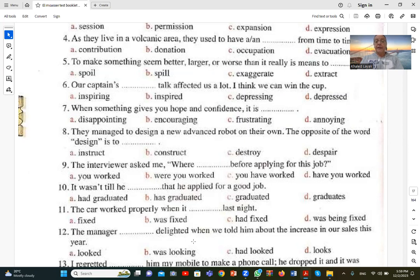Number ten. It wasn't till or until he had graduated that he applied for a good job. لأن عندنا till والجملة الثانية في الماضي, we use past perfect in the till clause. في وقت حدثين: الأول تخرج من الجامعة والثاني أقدم على وظيفة. لما فيه حدثين في الماضي the first event is in past perfect. Had graduated, B is correct.